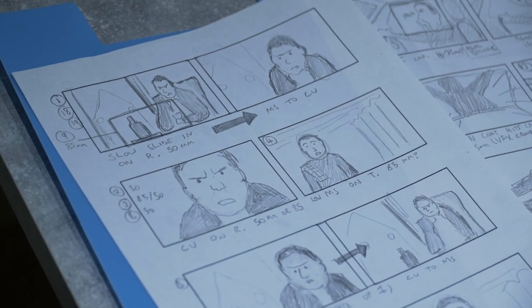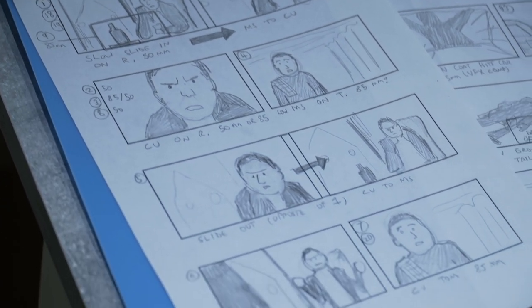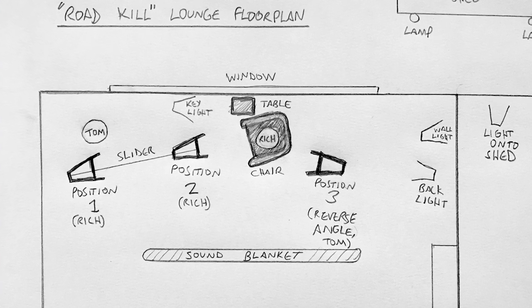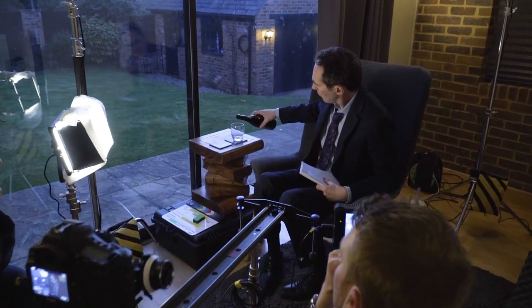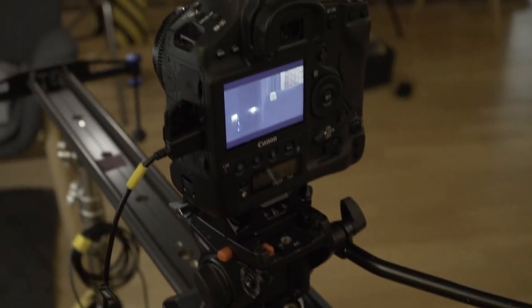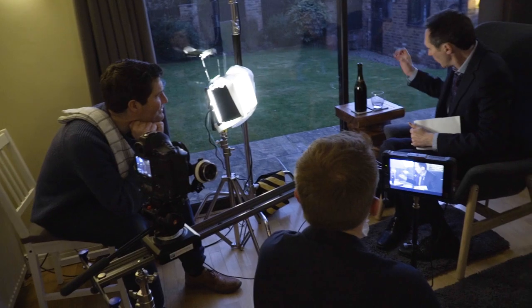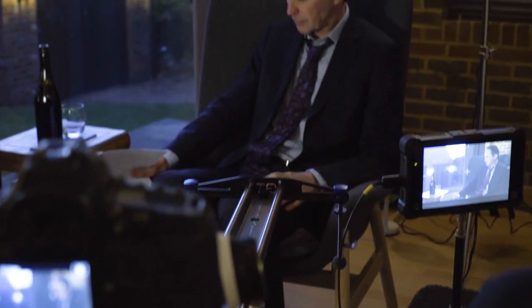We weren't going to have a lot of time with the actors to shoot this, so after making a floor plan and storyboard I decided we could film everything quickest if it was mostly based around two camera setups. First, the main angle facing Guy seated in a chair, which could change from a medium shot to a close-up by moving the camera on a slider. Then secondly, the reverse angle facing Nick, who is standing. We shot each setup one at a time, which meant we could light each one individually.